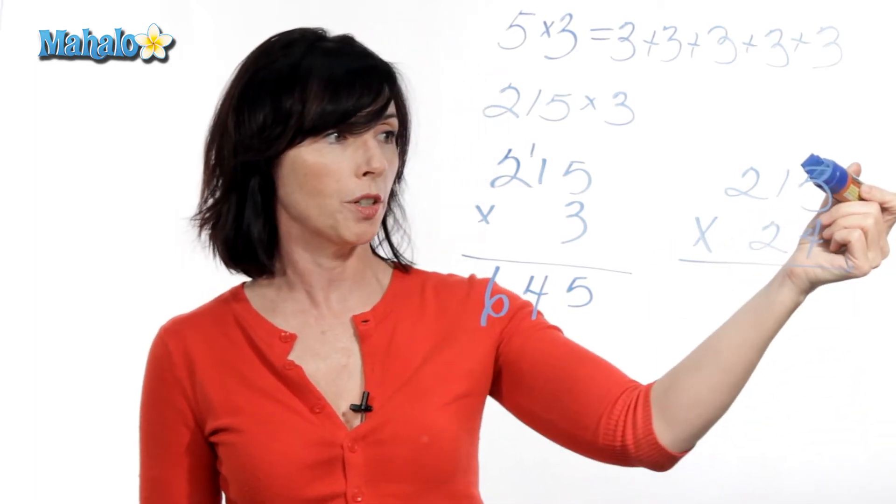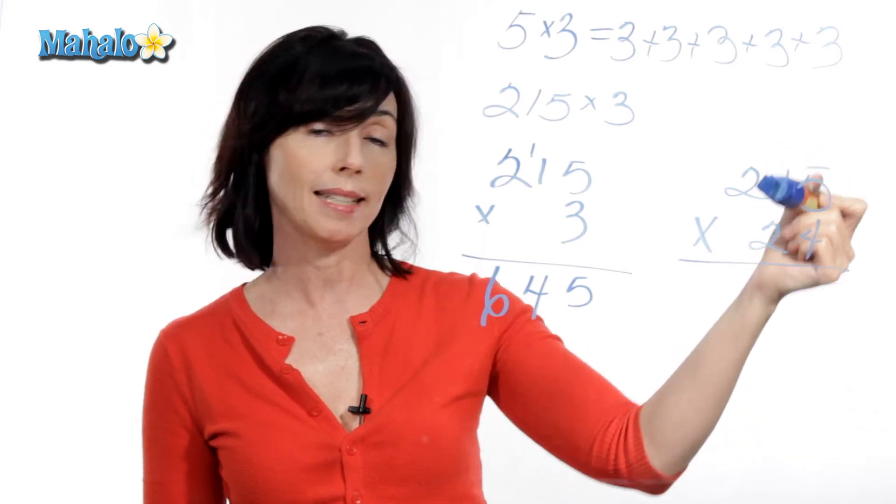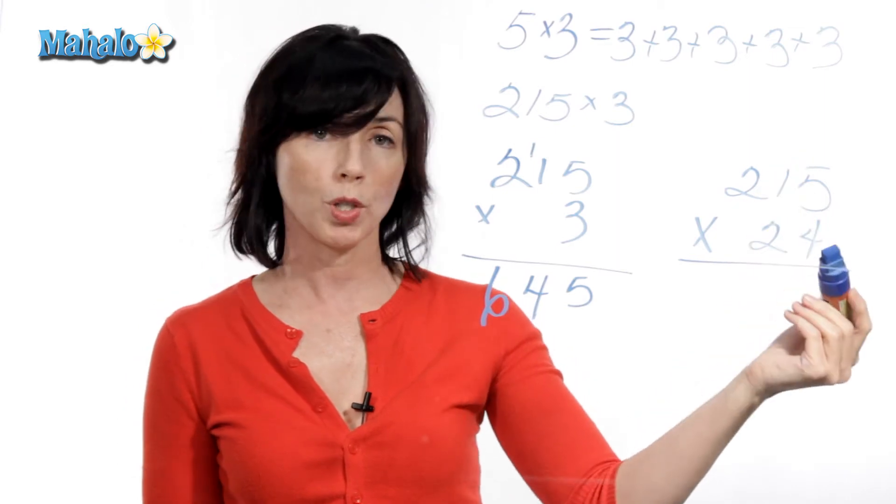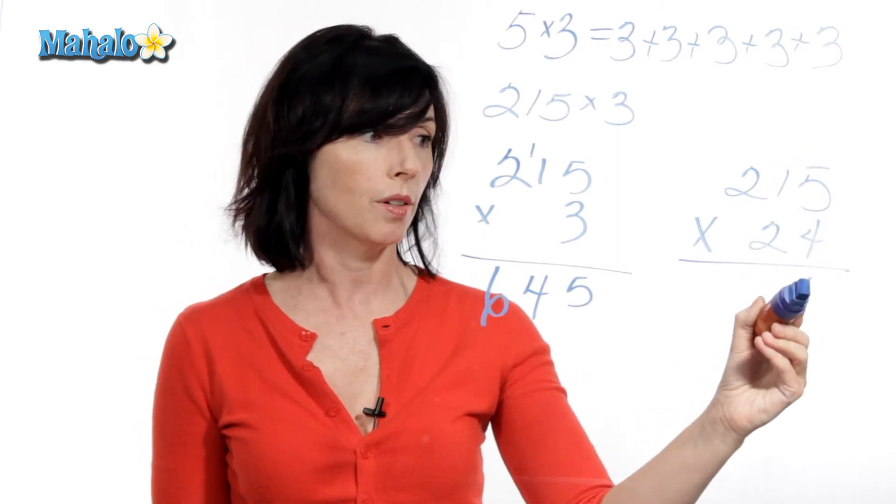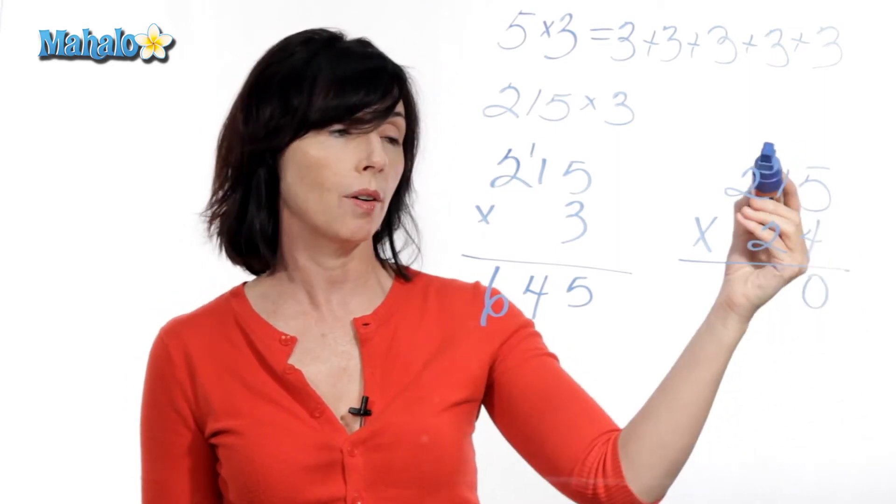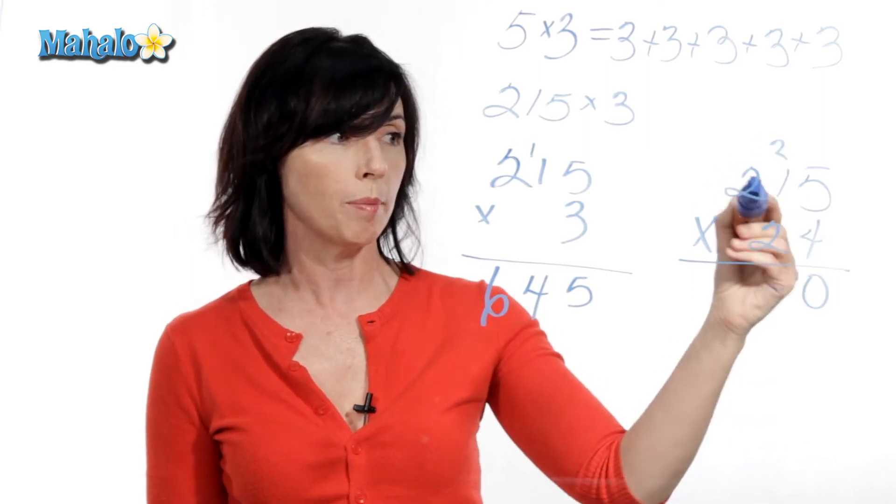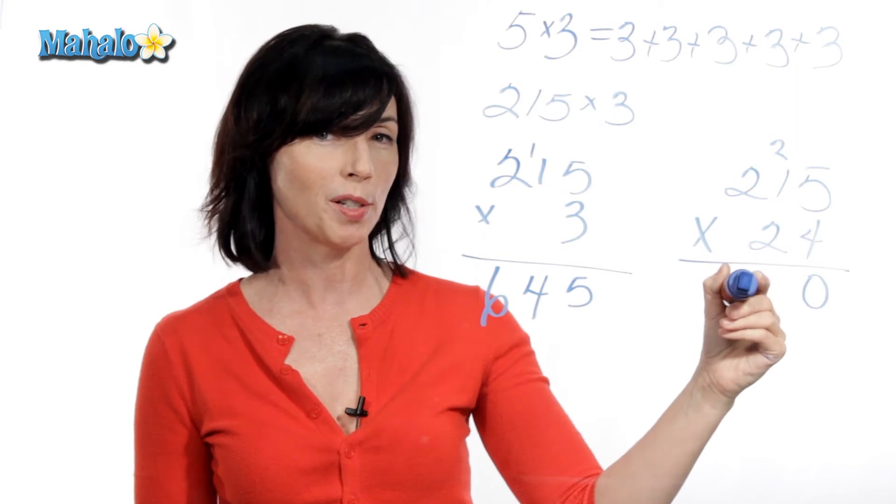Again, I wanna make sure that my ones digits are lined up, my tens digits are lined up, et cetera. Okay, so let's go. Five times four is 20. So I put down the zero of my 20, and I'm gonna carry the two. Now, we're just gonna worry about multiplying everything by four for now, and then we'll worry about the two afterwards.